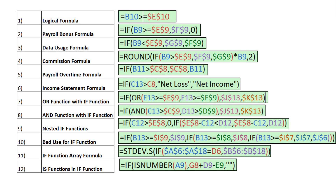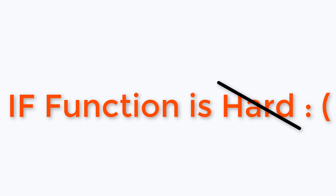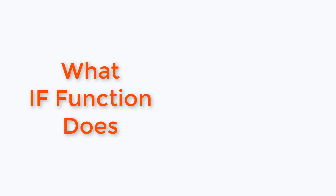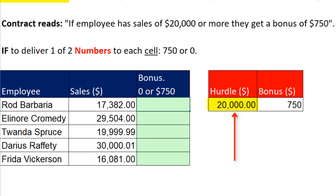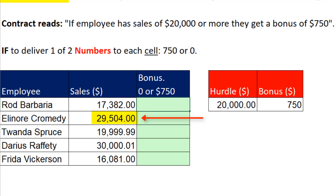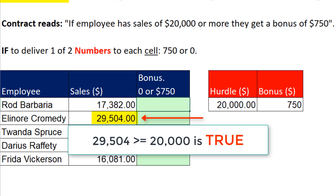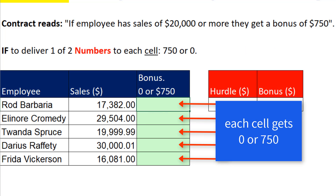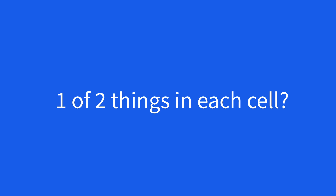Now oftentimes people think the IF function is hard. It's not hard at all. We'll start off with a very simple example that illustrates the essence of what the IF function does. If this is the hurdle in order for you to get a $750 bonus, because this number is less than the hurdle, we need a zero in the cell. But this sales number is greater than the hurdle, so we need $750 in the cell. Anytime you have one of two things to put in a cell, that's when you use the IF function.